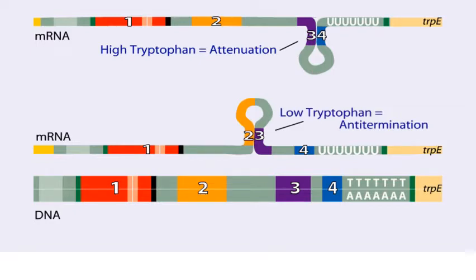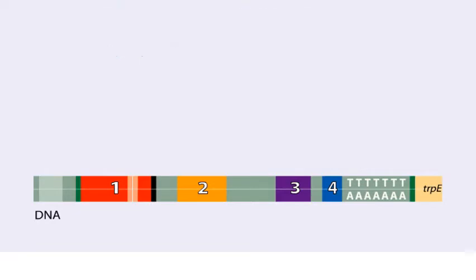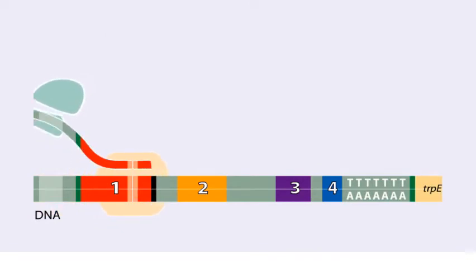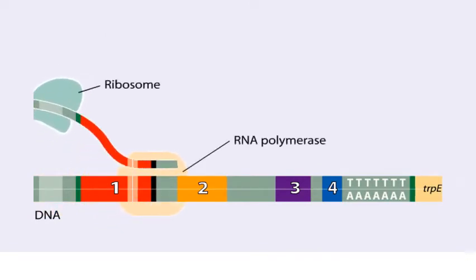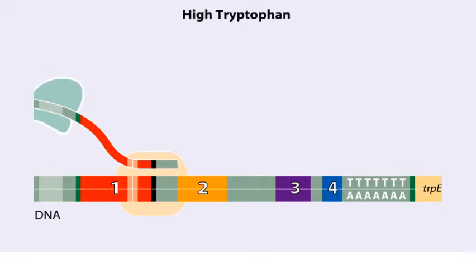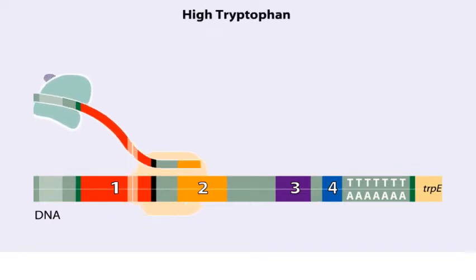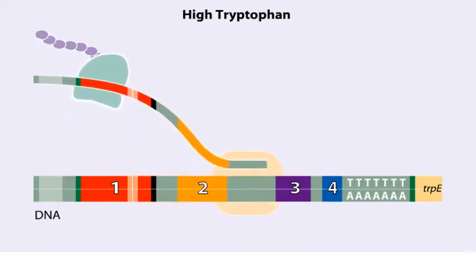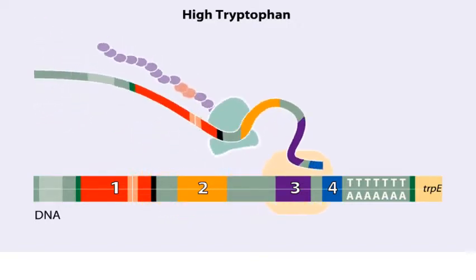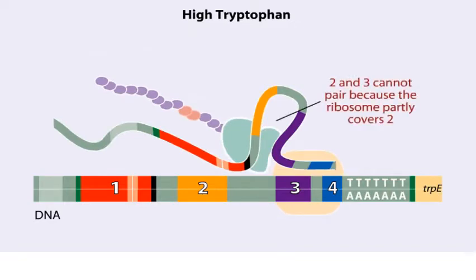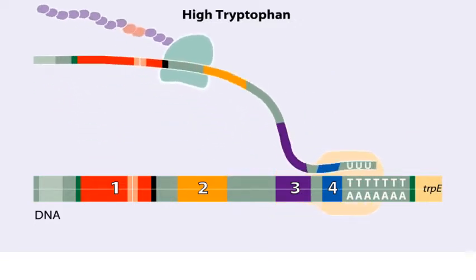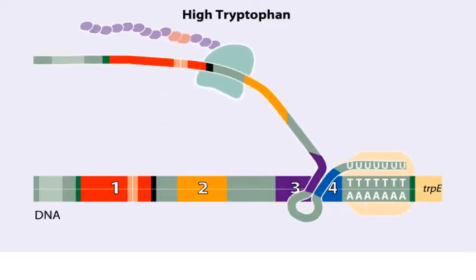Let's examine how these alternate structures arise. RNA polymerase begins transcribing the DNA. Closely following RNA polymerase, a ribosome begins to translate region one. When tryptophan is abundant, the ribosome does not slow down at the tryptophan codons. By the time region three is transcribed, the ribosome has already moved past the tryptophan codons to partly cover region two. Because region three is prevented from pairing with region two, it pairs with region four instead to produce the attenuator, which terminates transcription.